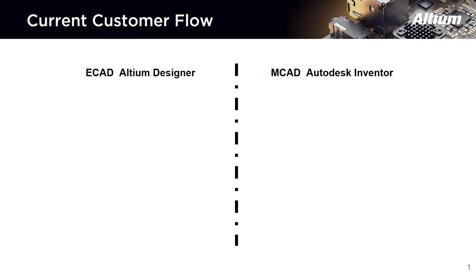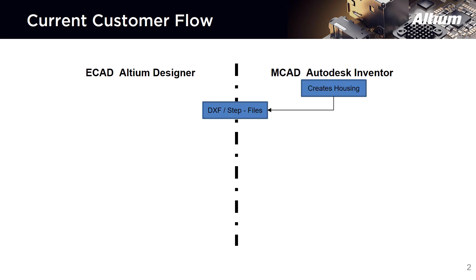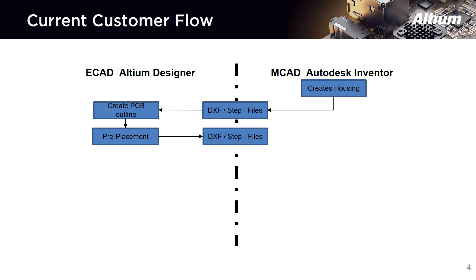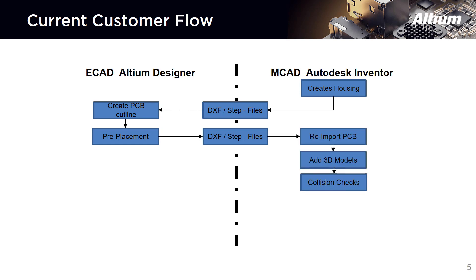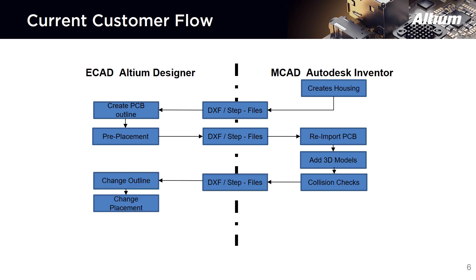The customer explained to me his current workflow. There is an ECAT department using Altium Designer and an MCAT department using Autodesk Inventor. The MCAT department created the housing and provides the construction data. The ECAT department imports the data and creates the PCB outline and does the pre-placement of components. The ECAT then exports the PCB and placement as files and passes them back to the MCAT department. The MCAT then re-imports the data and adds 3D models to the components and runs collision checks.